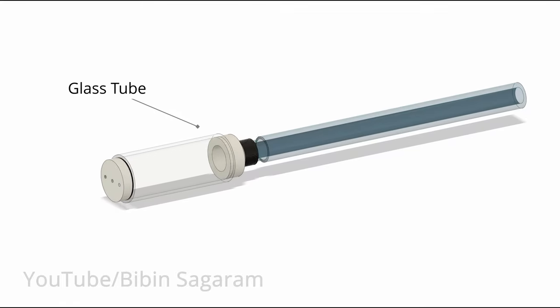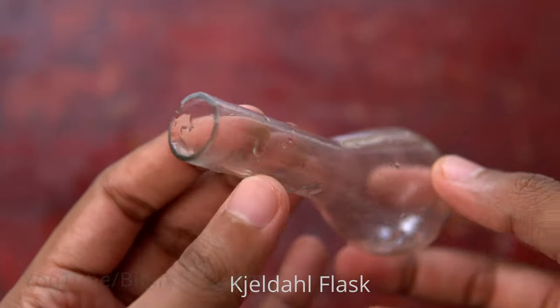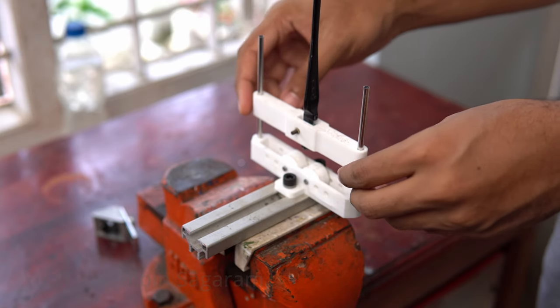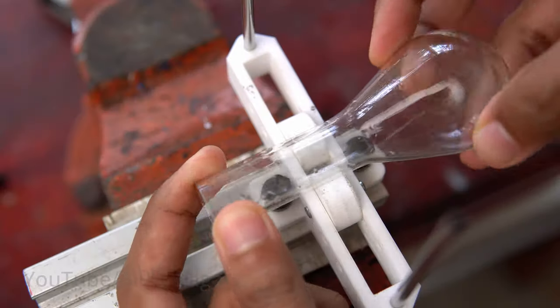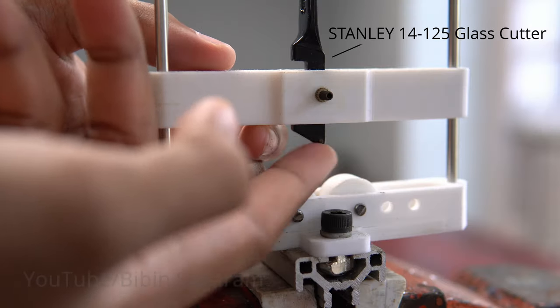My plan is to use a glass tube for the combustion chamber so that I can see the combustion. I will be cutting the glass tube from an old flask. I made this 3D printed jig for cutting glass. On the bottom we have two rollers to support the tube and on the top a Stanley roller glass cutter is fixed on a 3D printed part.